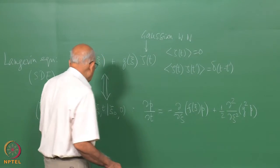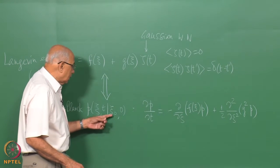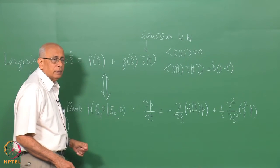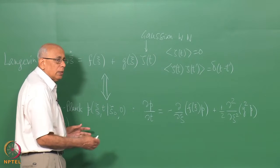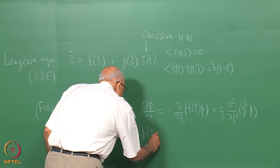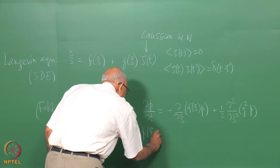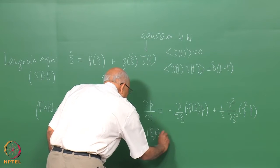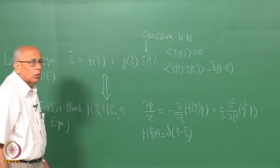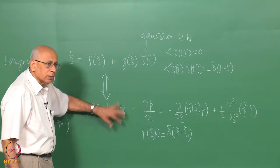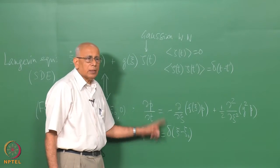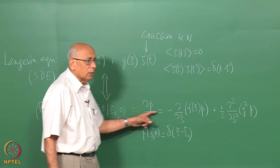Since the initial conditions are at xi-naught at t equal to 0, the initial condition on P is simply a delta function: P of xi at t equal to 0 equals delta of xi minus xi-naught. Very often I will suppress this and just call it P of xi comma t, where P of xi comma 0 is some prescribed initial condition, and this is what you solve the equation with.